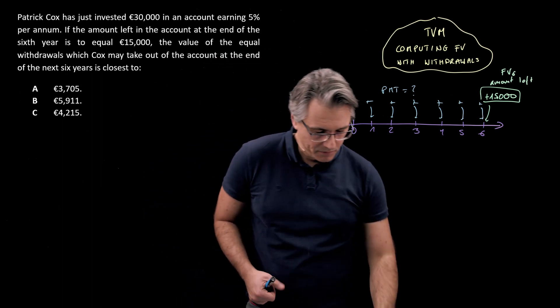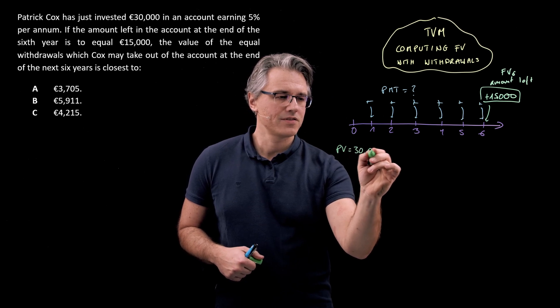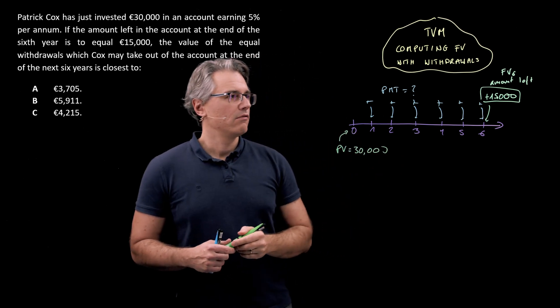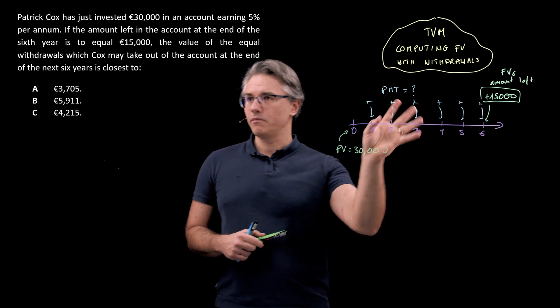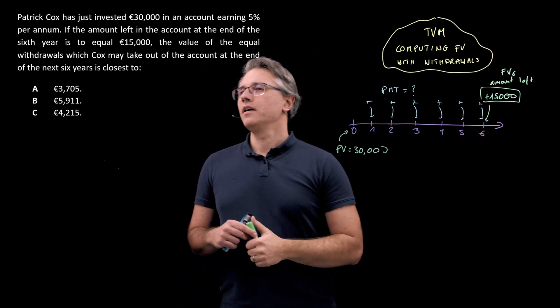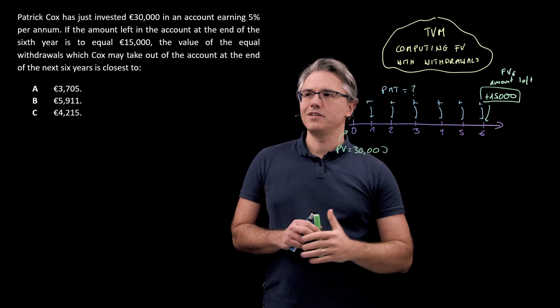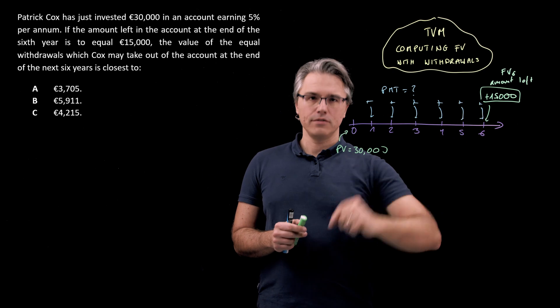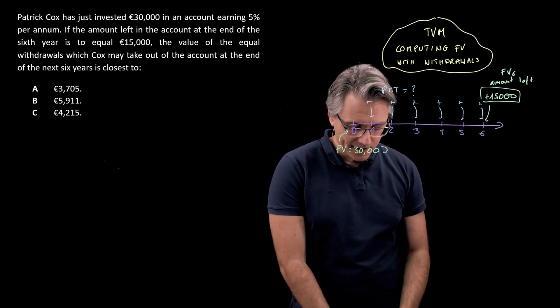Now for the other inputs, PV is going to be over here, €30,000, so at time zero. We've got an FV at time six. We've got PMTs. Now please note that this question does say the value of the equal withdrawals which Cox may take out of the account at the end of the next six years. So including that outflow over here, and that's the amount left after it.